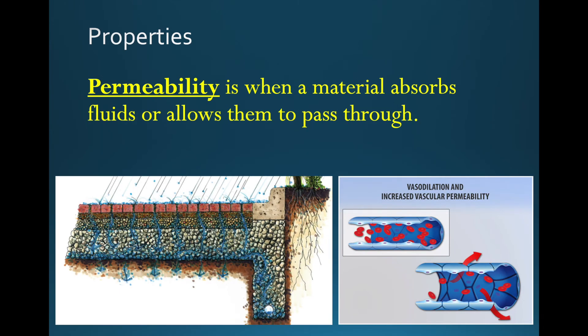Then we have permeability. That's when a material absorbs a fluid or allows a substance to pass through it. On the left-hand side we have soil — when it rains, the water trickles through the soil, so the soil is permeable. On the right side we have blood vessels. Blood vessels allow certain substances to pass through them to get toward the cells. The cells that perform cellular respiration will produce carbon dioxide, which then ends up in the blood vessels so it can eventually be expelled through the lungs. So blood vessels are permeable both ways. Something that is not permeable would be called impermeable.